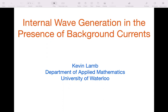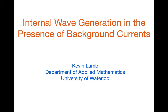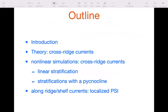This is all two-dimensional — they're not actually eddies, just background currents in one direction. As a brief outline: an introduction and some theory about internal wave generation in the presence of cross-ridge currents — generation by tides going back and forth over a ridge with a current up near the surface. Then some numerical simulations focusing on cross-ridge currents with either a linear stratification, and a little bit about stratifications with a pycnocline. And if there's time, I'll show some results for along-ridge currents and localized parametric subharmonic instability.